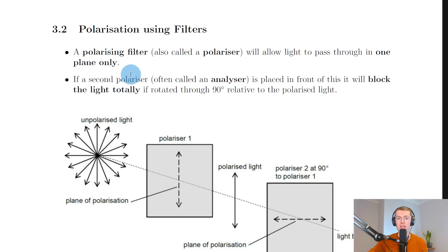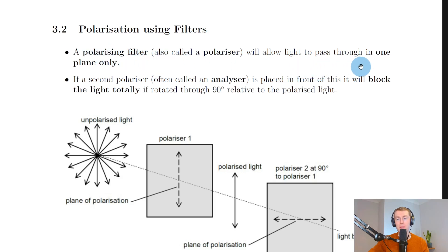Remember in the previous theory video we looked at the difference between plane polarized and unpolarized light. We saw that plane polarized light has electric field oscillations in one plane only, whereas unpolarized light has electric field oscillations in every plane. So a polarizer or polarizing filter will allow light to pass through in one plane only.